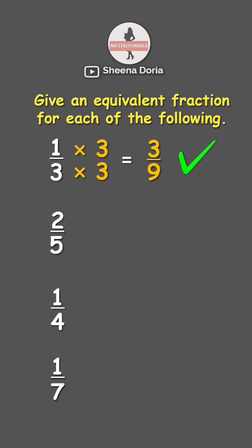Next, for two-fifths, let's say I will multiply this by four. Two times four is eight, while five times four is twenty. Therefore, two-fifths and eight over twenty are equivalent fractions.